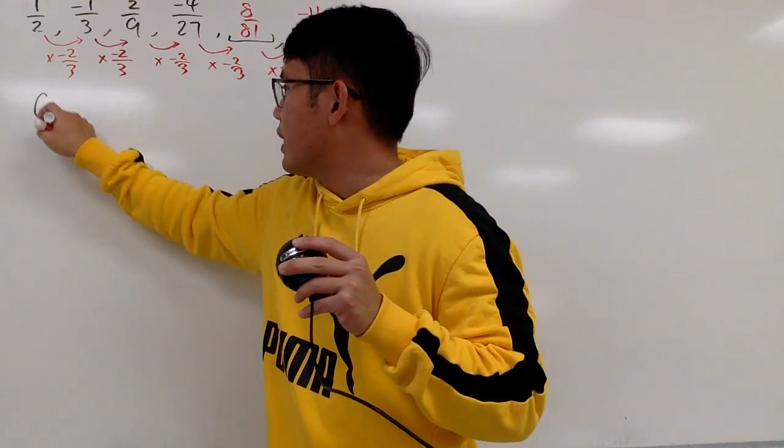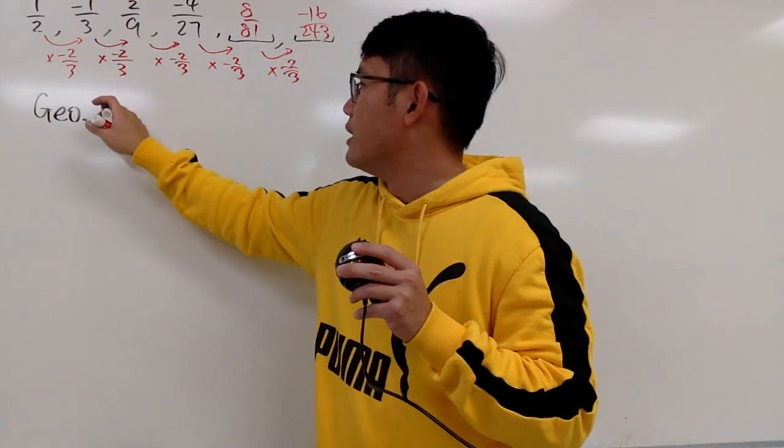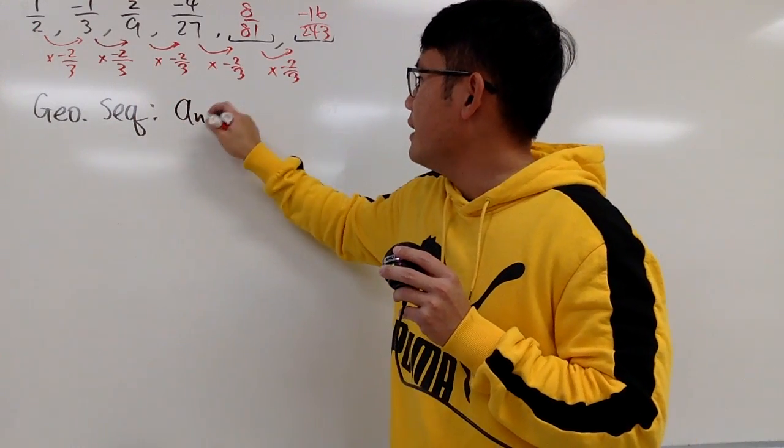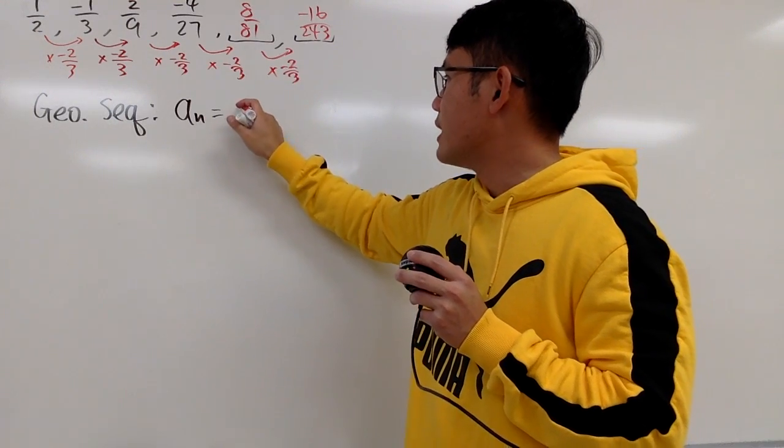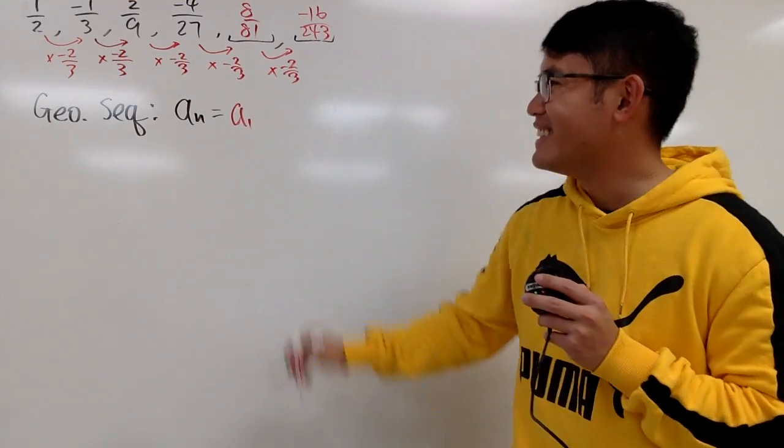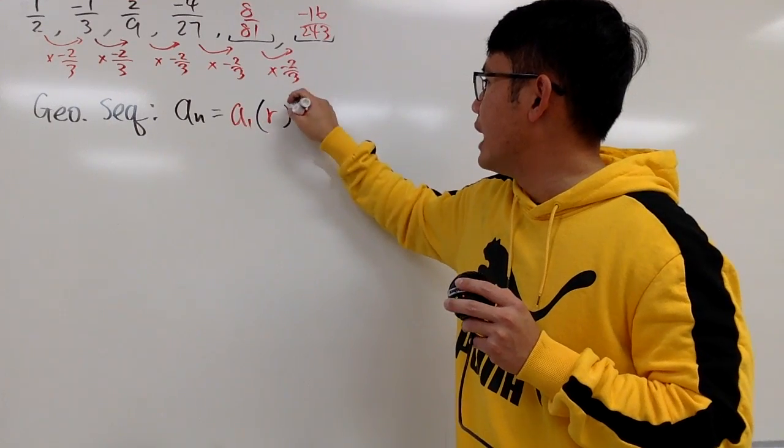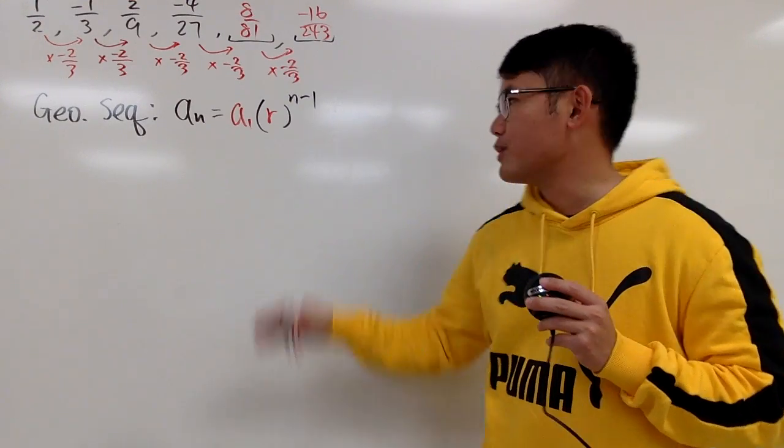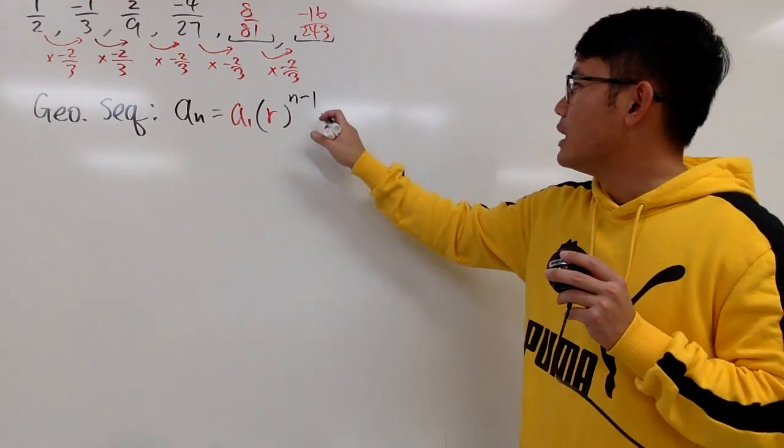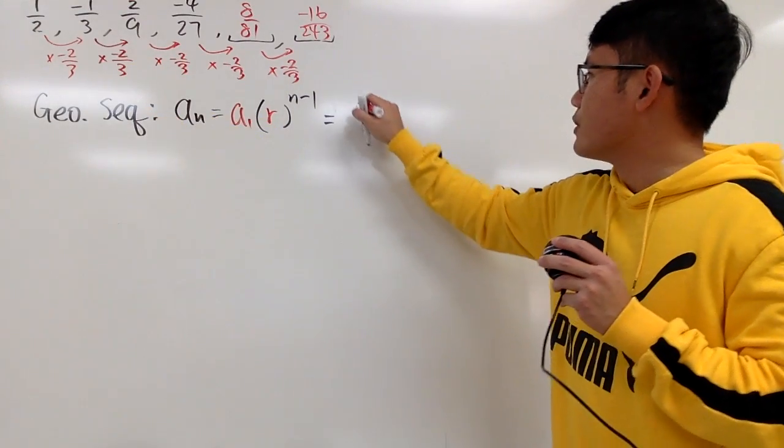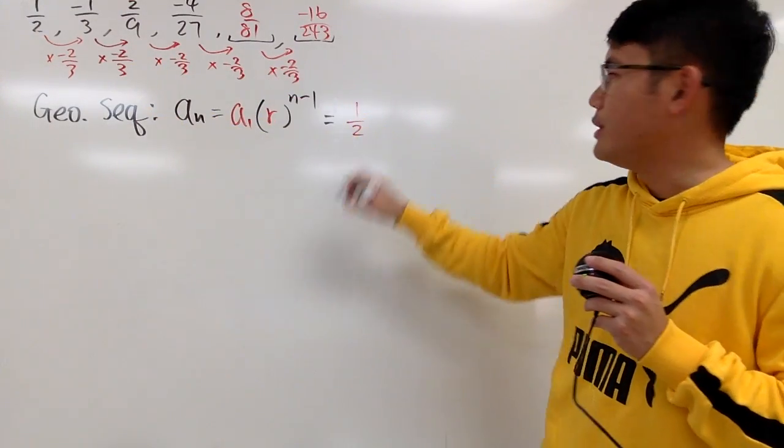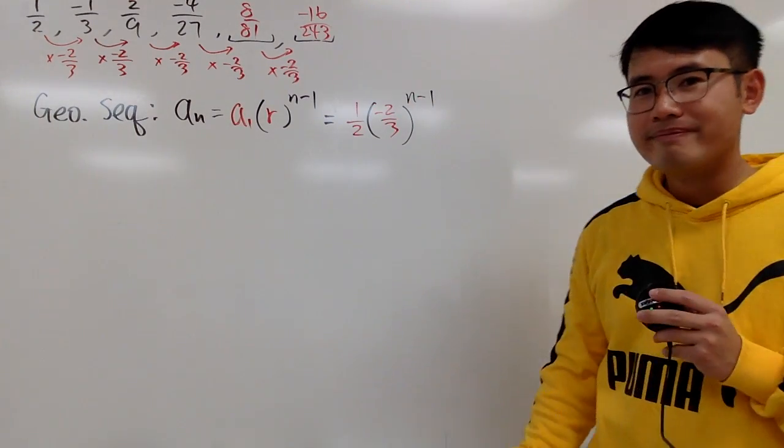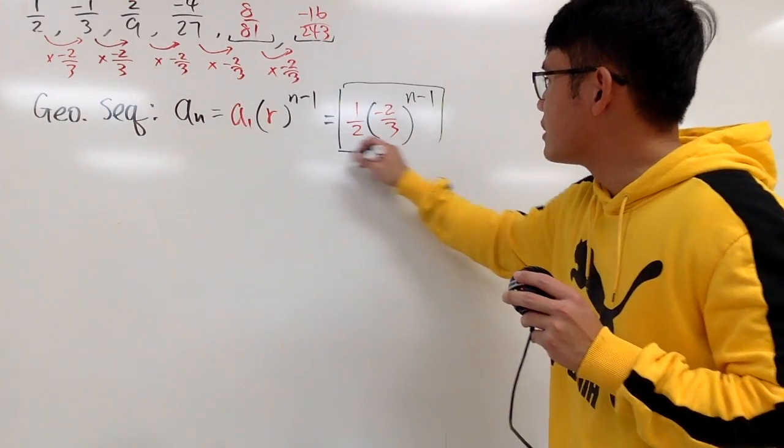Alright, so here we go. This right here, as we mentioned, is a geometric sequence. So let's put down the formula for the general term. An equals A1, the first term of our sequence, and then we multiply by r raised to the n minus 1 power. Well, remember, in our situation here, n starts with 1. So you just put that down, and r is -2/3. So you just multiply by -2/3 and then you write it as raised to the n minus 1 power. And you're done. So this right here is the formula.